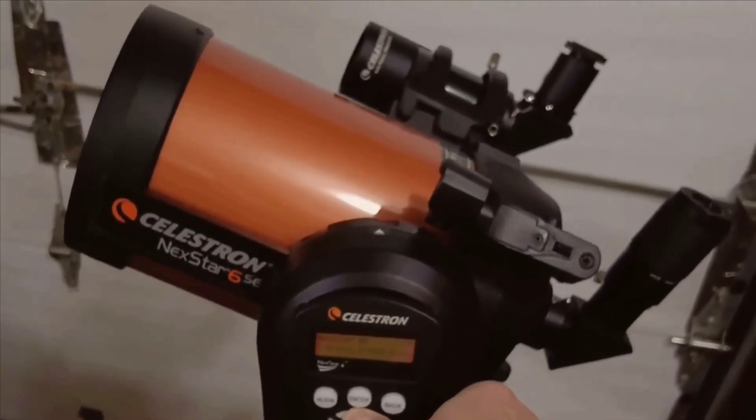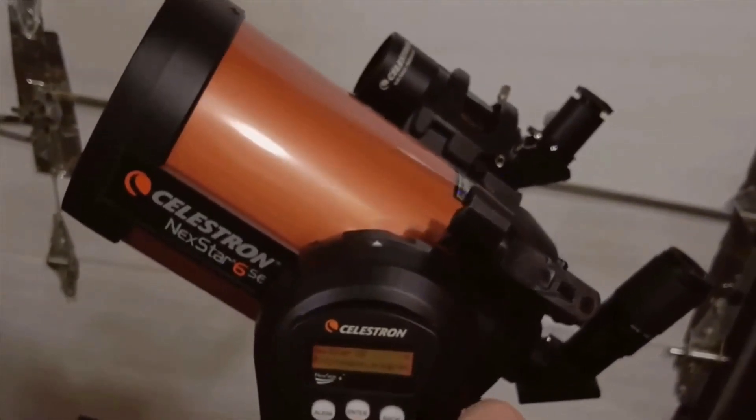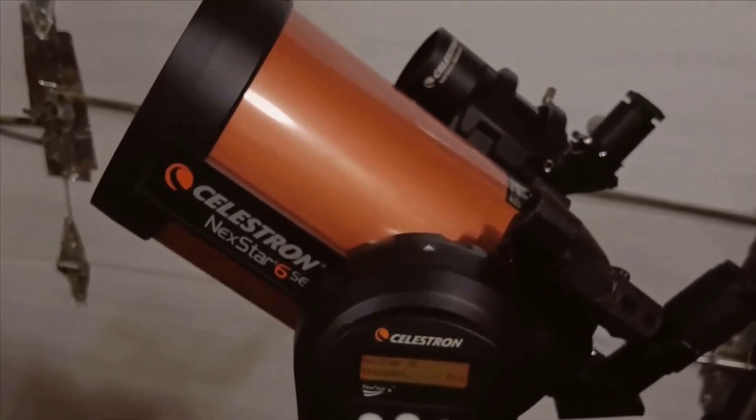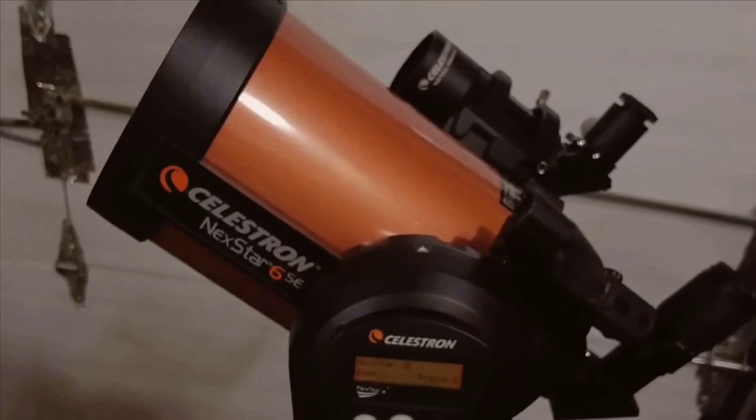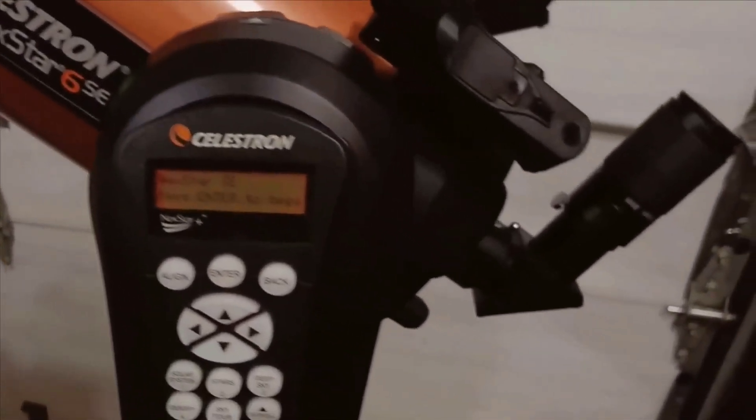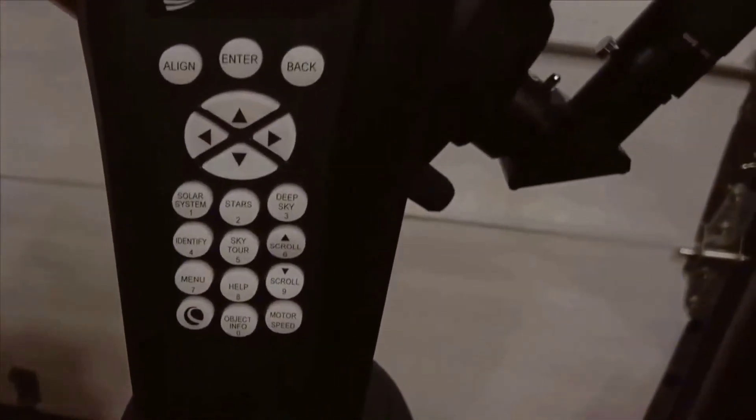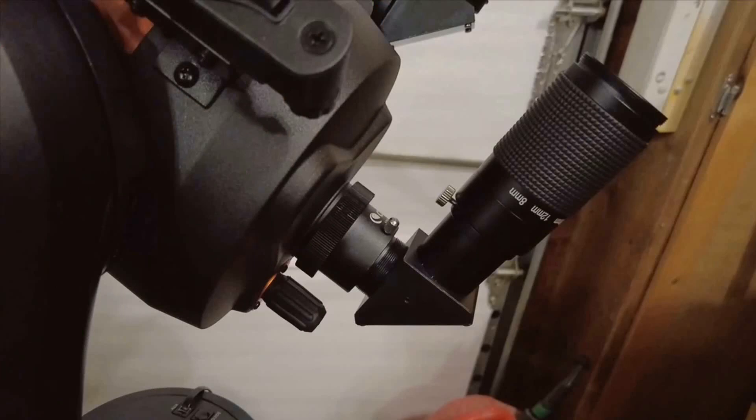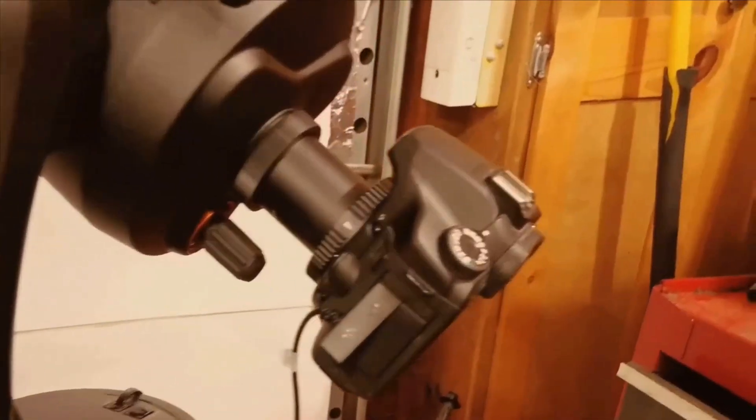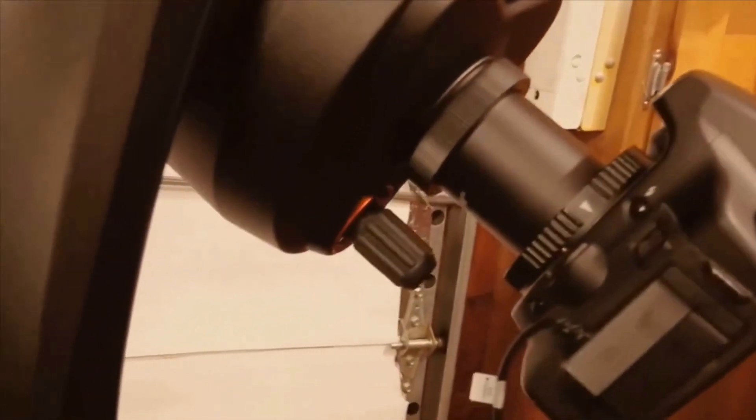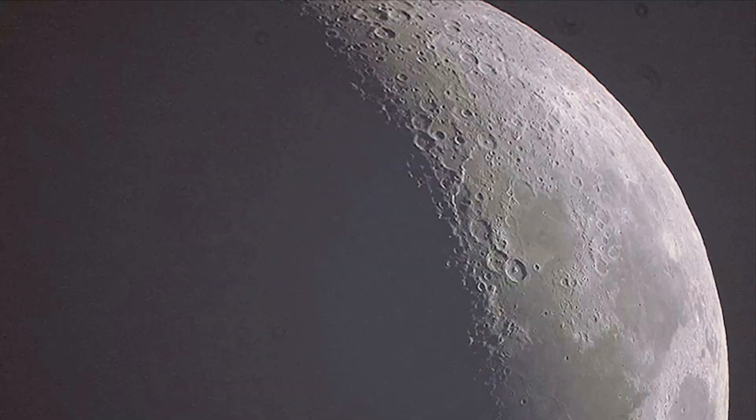The Nexstar 6SE is a computerized telescope, which means it comes with an automated go-to mount. This feature is amazing for anyone new to astronomy and seasoned stargazers alike. The go-to mount allows you to locate and track celestial objects effortlessly. All you have to do is input what you want to see, and the telescope aligns itself to the object. It even continues to follow the object if it moves.